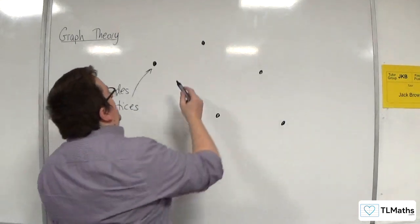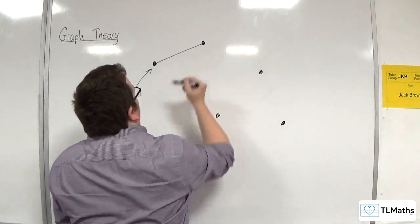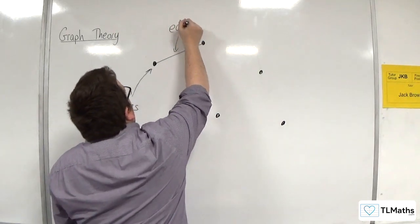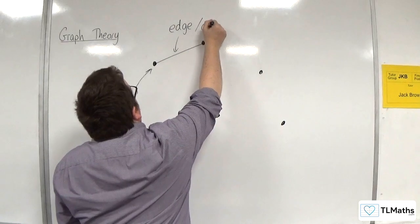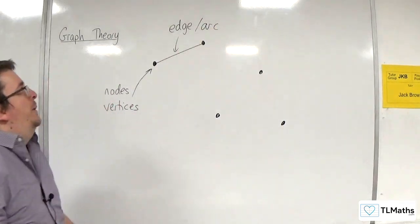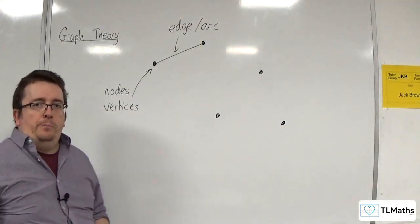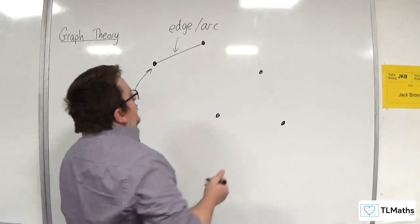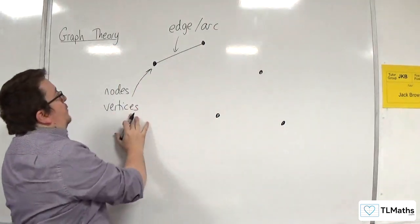And let's say that this one is connected to this one. And so this represents an edge or an arc. So you can either refer to it as an edge or an arc. You may see it written as both, depending on the textbooks that you're looking at. So that's an edge or an arc, and this is a node or vertex.